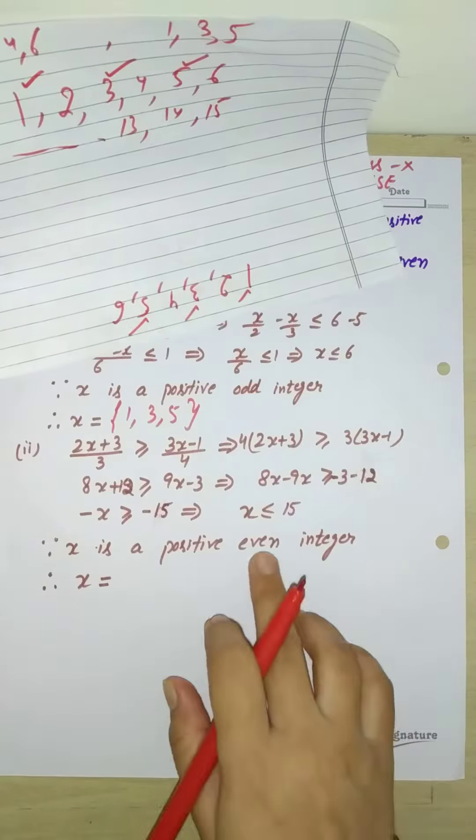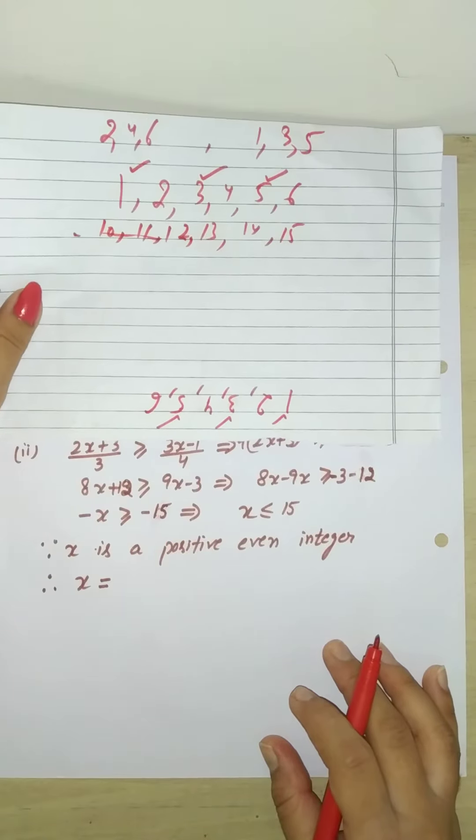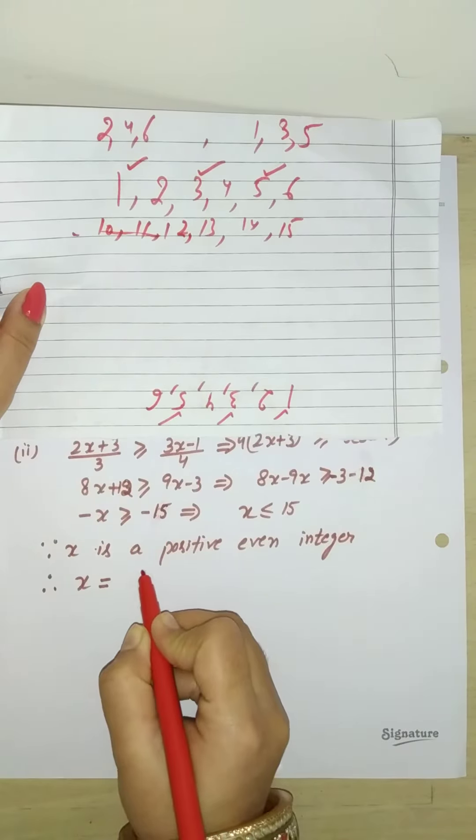Even integers will be found. Look at this: 12 will be there, then 11, 10. But if we find even integers, then what will happen? Even will be: 2, then 4, 6, 8,